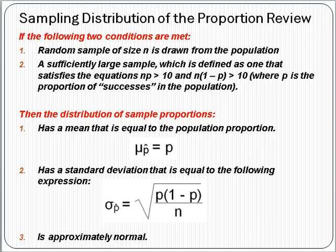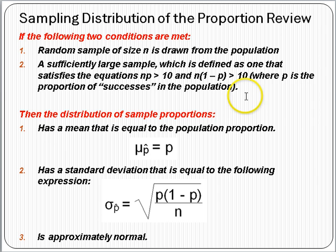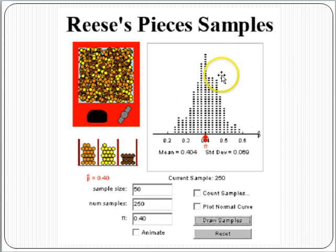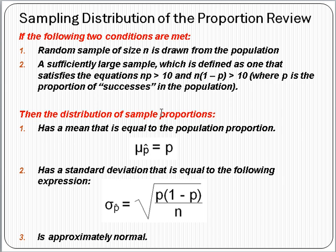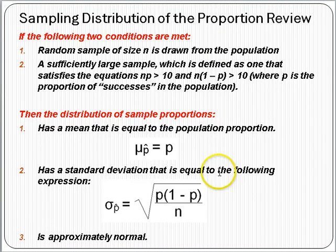If the following two conditions are met: namely, you have a random sample of size n drawn from the population, and the sample is sufficiently large, which is defined as one that satisfies the inequalities n times p is greater than 10, and n times 1 minus p is greater than 10. In these inequalities, p is the proportion of successes in the population, or the population proportion. If these two conditions are met, then the distribution of sample proportions is approximately normal, has a mean equal to the population proportion, and has a standard deviation equal to this expression.